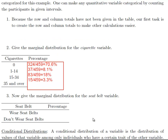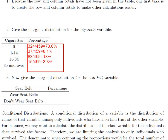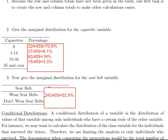Then I want to do the same thing for the seatbelt variable. Looking at those row total numbers: 243 divided by 459 equals 52.9%, and 216 divided by 459 equals 47.1%. So about 53% wear seatbelts and about 47% don't. That's the marginal distribution for the seatbelt variable.